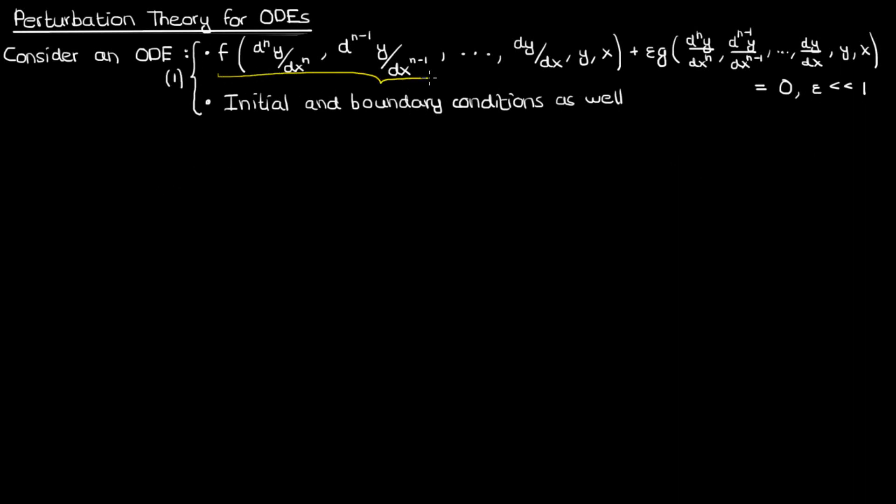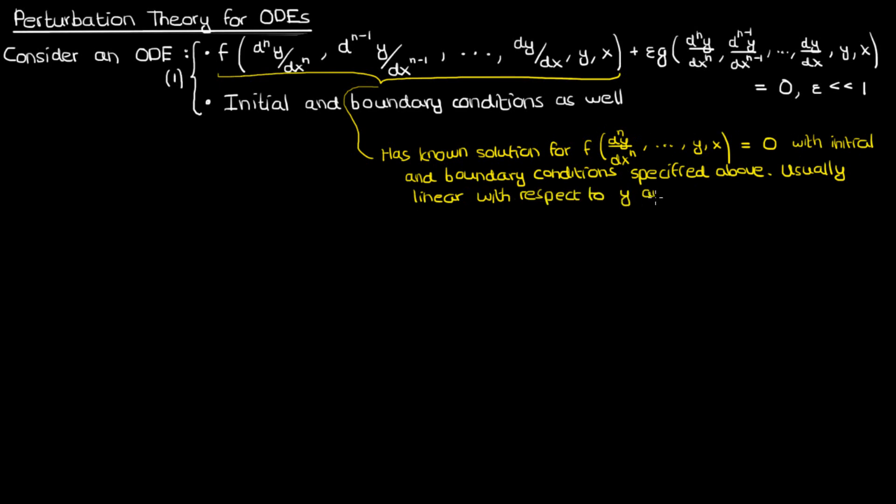Now in typical perturbation problems this function f, which isn't multiplying any perturbation parameters, has a known solution when it's by itself, with the initial and boundary conditions mentioned above. And because f has a known solution, f is usually a linear term with respect to y and its derivatives. The reason for this is that linear differential equations have been thoroughly solved by the mathematics community, so it's more likely that we'll find a solution to a differential equation that's linear. On the other hand, this function g that's multiplying the epsilon is usually nonlinear, and it's the nonlinear terms that make things a lot more difficult to solve.